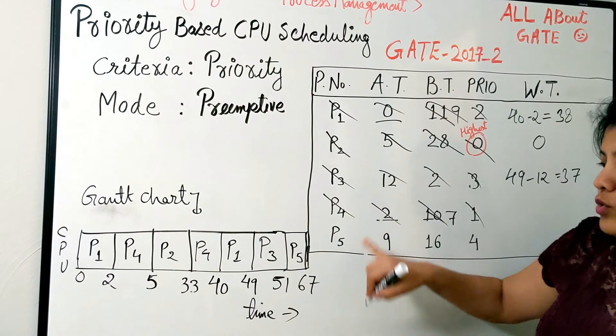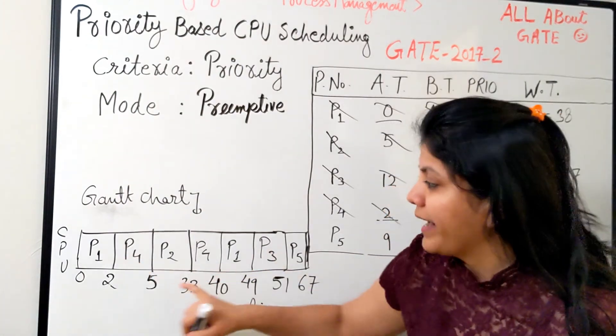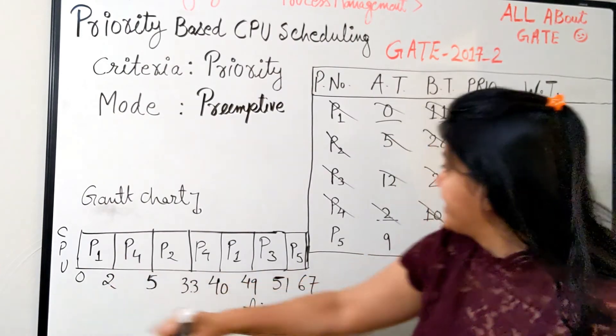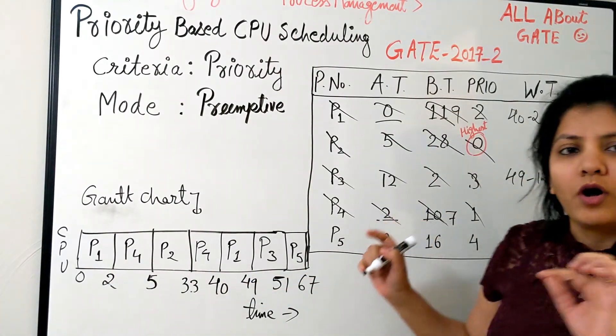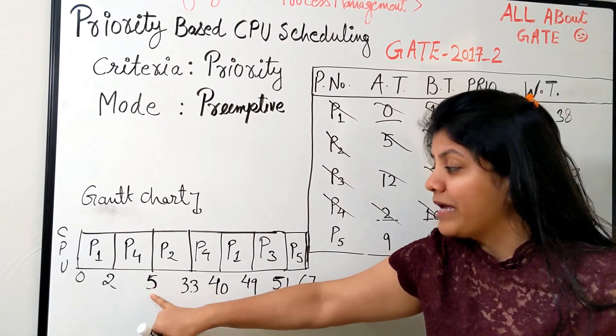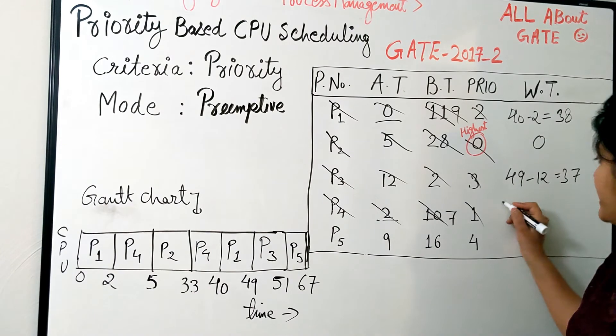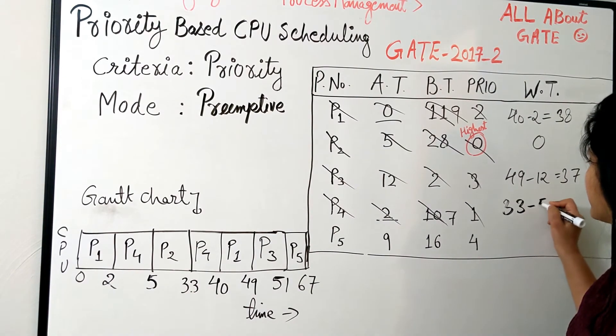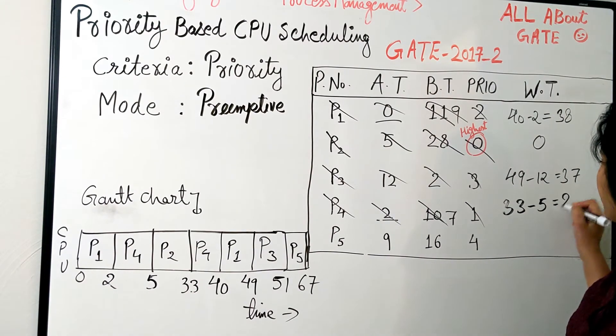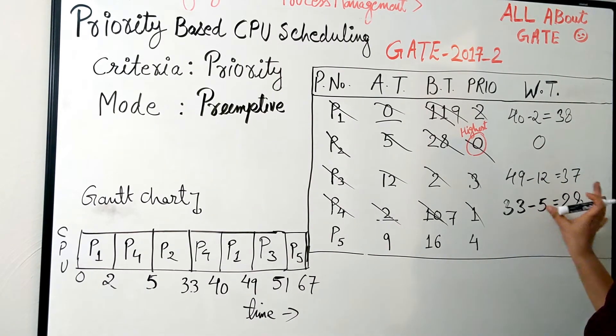Next, P4. P4 came at 2, was scheduled initially, but you see here you have to take care - P4 was scheduled two times. When at time 2 it got zero waiting, but then again at 33. So from time 5 to time 33 it was just doing nothing but waiting, so that becomes 33 minus 5, which is 28. It had to wait 28 bursts, which was exactly the same as the burst time of P2, because it waited for P2 to complete.